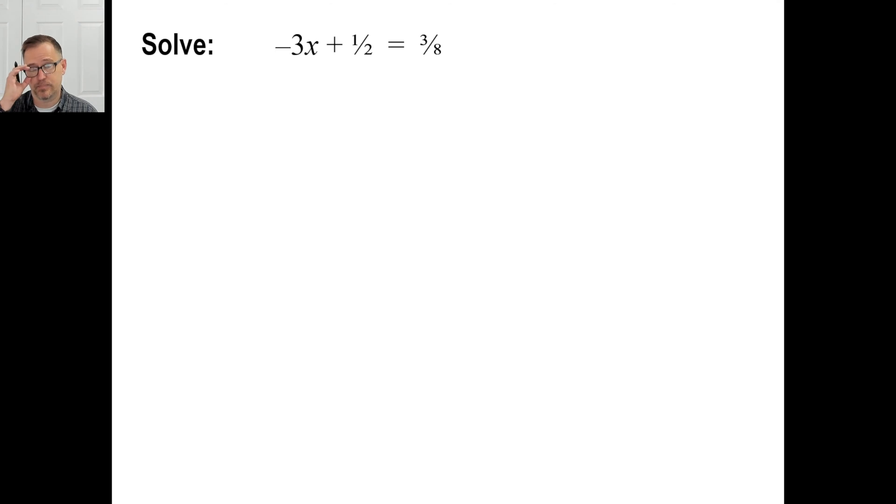Okay. Pause it and try B. Okey doke. And we're going to subtract a half from both sides, which, you know what, let's go ahead and turn this into four eighths, right? That's the same thing, right? So we have three eighths minus four eighths on this side. Ooh, isn't that tricky? How about that?